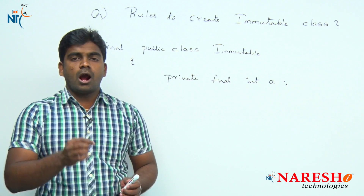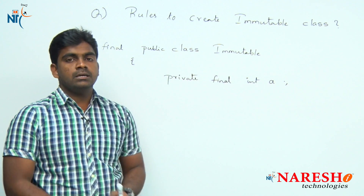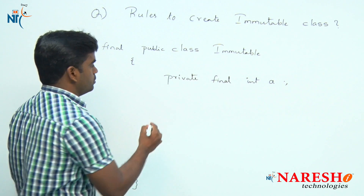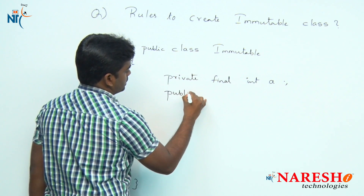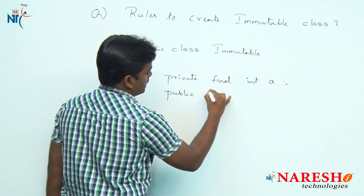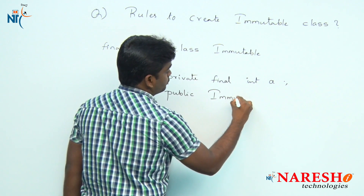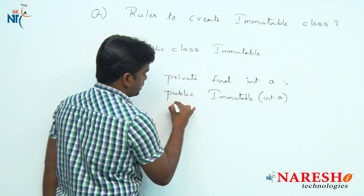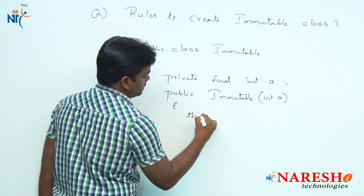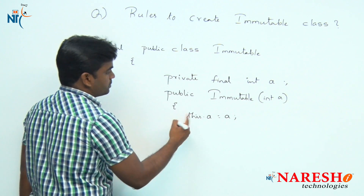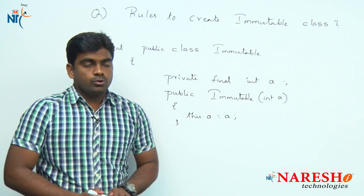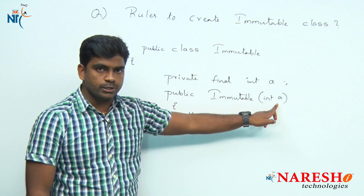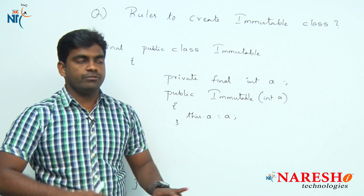The third rule: initialize all values through the constructor. The constructor runs during the process of object creation. Pass the values to the constructor and they will be assigned to the final variables. Once assigned at object creation time, the values cannot be modified.